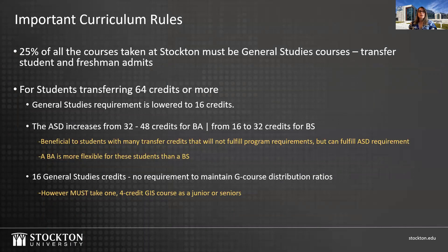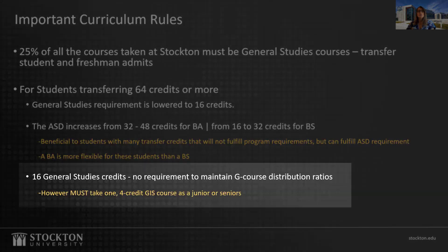For all Stockton students — transfer or freshman admits — 25% of all courses must be general studies courses. For students transferring 64 credits, the general studies requirement is lowered to 16 credits. As a result, you could take more at-a-distance credits towards your Stockton degree, which would be 48 credits for a BA and 32 for a BS. This is beneficial for students with excessive elective credits that may count for at-a-distance classes. A BA degree provides higher flexibility than a BS to fit transferring credits in at-a-distance. With the 16 general studies credits, you're not expected to maintain specific ratios between general study course types, but you still must take one four-credit GIS course as a junior or senior to fulfill the general studies GIS requirement.